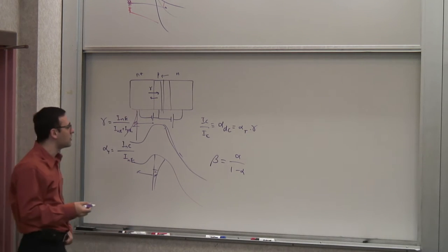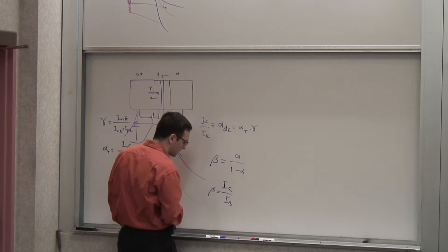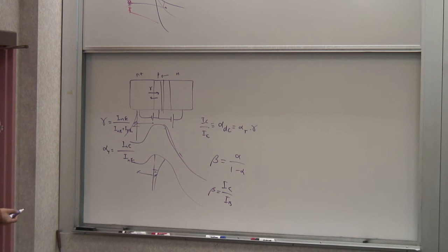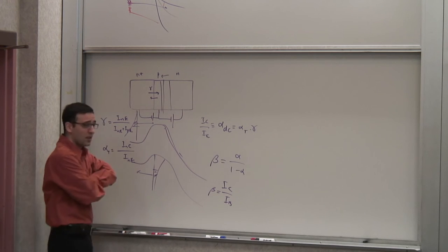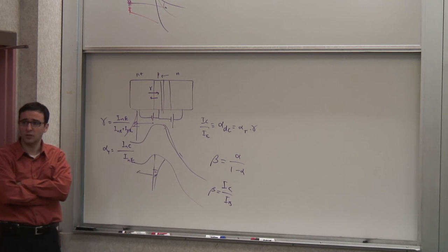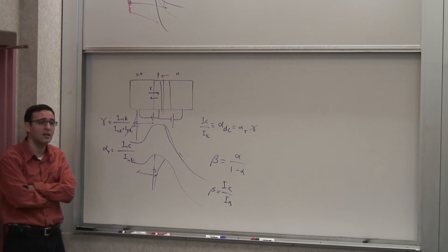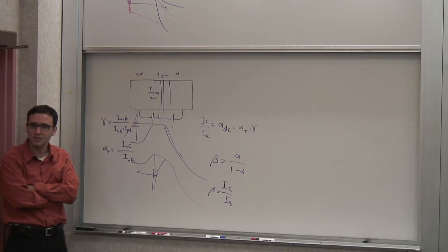We can then define beta as alpha over (1 minus alpha). That parameter is quite large — the closer alpha is to one, the larger beta is; if alpha equals one, beta becomes infinity. Beta is the measure of the ratio of collector current to base current. Although we treat it as a constant, it's not exactly constant — it changes with temperature, and it even changes with current. If you look at a plot of beta versus current, you see it's not quite constant.